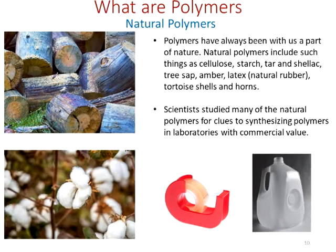Natural polymers have been with us since nature has been here. Examples include cellulose, starch, tar, shellac, tree sap, amber, latex, natural rubber, tortoise shells, and horns — these are all polymers. These polymers are very large molecules, and because of their structure they impart certain features to their function, whether to a tree, a plant, a flower, or a vegetable. These polymers are very important.